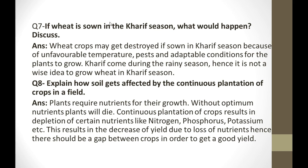The next question: explain how soil gets affected by the continuous plantation of crops in a field. Continuous plantation means first crop grows, then second, then third, then fourth — crops grow regularly without giving the soil time to recover and replenish itself.